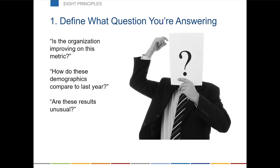For any particular chart or metric or square in a dashboard, you should be able to say, here is the single question that I'm answering. For instance: is the organization improving on this metric? How do they compare to last year? Are these results unusual? It's more nuanced than just 'what's the mortality rate' — because if the mortality rate is 9.7, what does 9.7 mean? Try to make sure that you know what question your audience has and what it is you're answering.